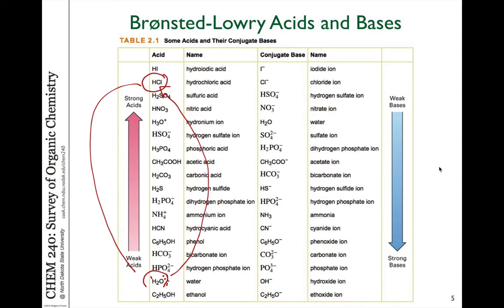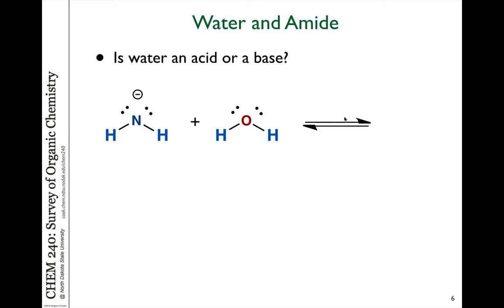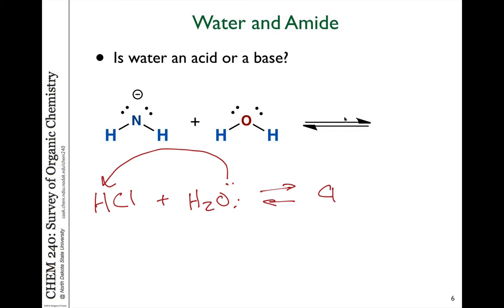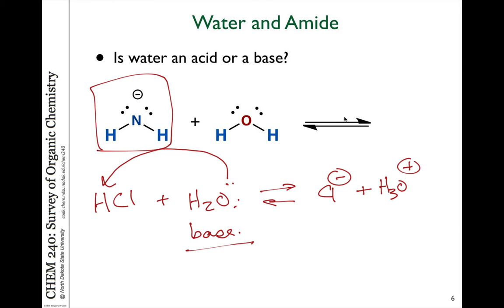If we take HCl and react it with H₂O, water can act as the base, deprotonate HCl, and generate Cl⁻ as the conjugate base plus H₃O⁺, the hydronium ion — so water is acting as a base. However, if you put water in the presence of an even stronger base, such as the amide anion NH₂⁻, then it's the NH₂⁻ that acts as the base.